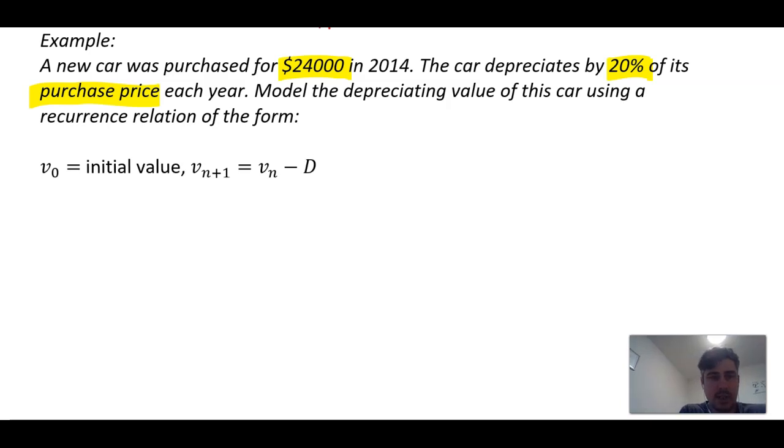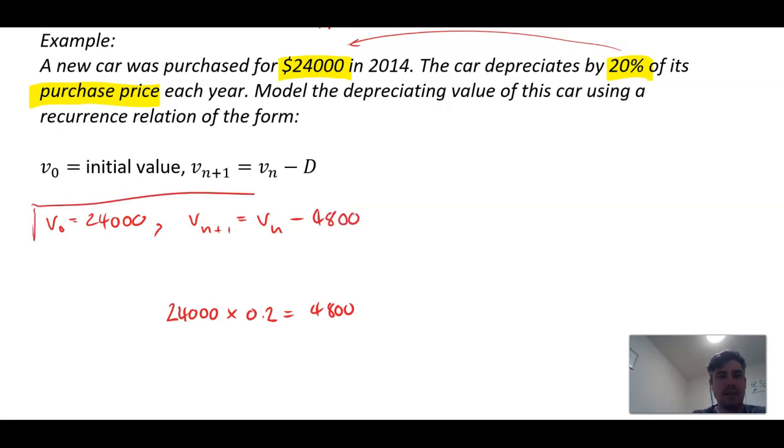V_0 is the initial value, so V_0 here is $24,000. Then you put V_n+1 equals V_n minus D, and this is where we want to find our common difference. The common difference is 20% of the original. So if I take $24,000 and times by 0.2 to find 20%, it gives me $4,800. That's my common difference, $4,800, and that is the recurrence relation.